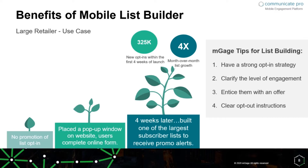Now let's look at four tips for list building. First, you need a strong opt-in strategy. You have to understand your audience — you need to know who you are targeting and who the people are that you want to generate an opt-in from to your marketing lists.